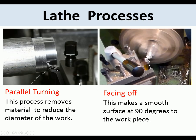The two most common lathe processes are parallel turning, where the tool moves along parallel to the rotating work to remove material, and facing off, where the tool moves across the face of the material to make a smooth surface at 90 degrees to the work piece.